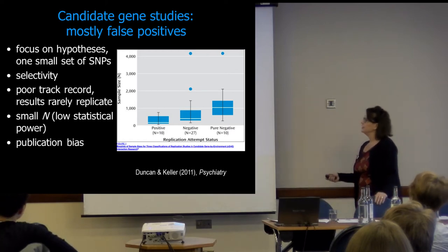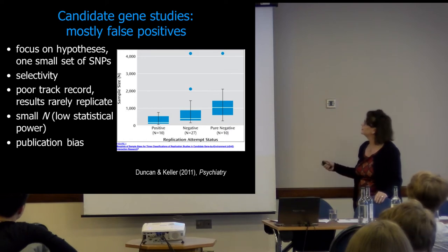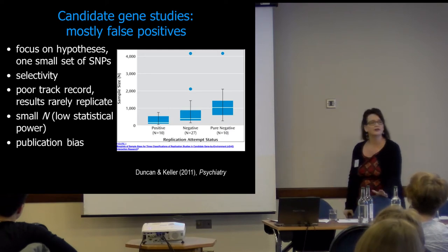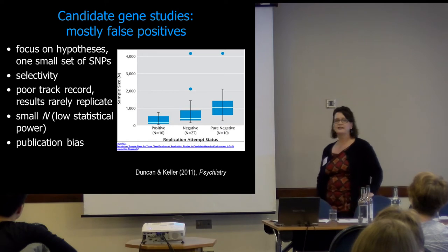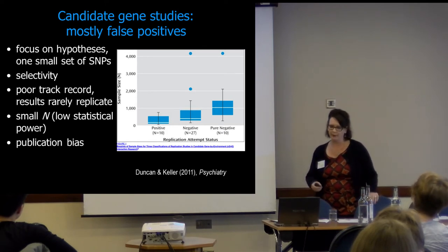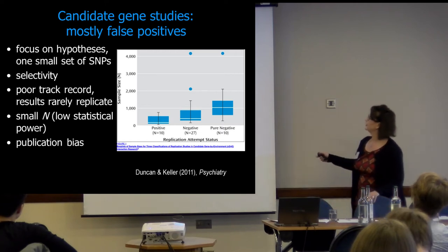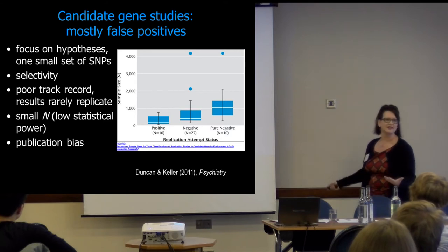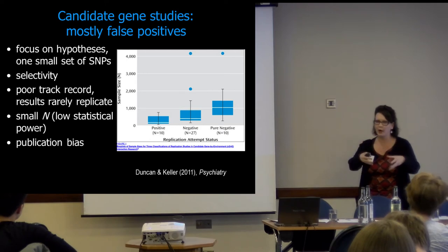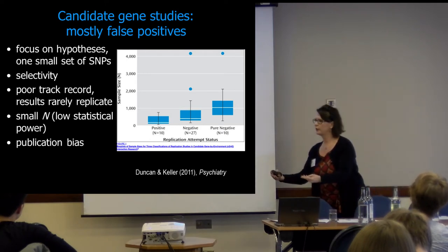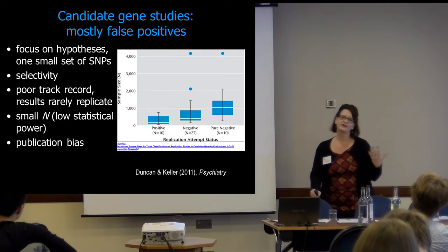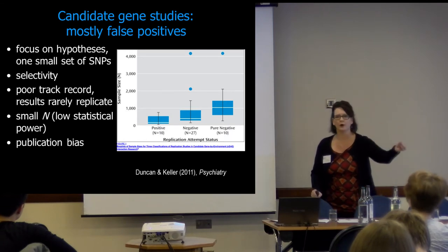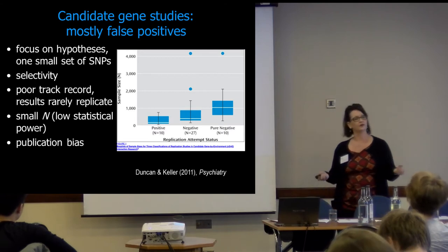Duncan and Keller did an analysis of some of these early studies and showed they often focused on one small set of SNPs, had very selective populations, rarely replicated — about 10 replicated, 27 had no replication, and one was purely negative. Most studies could not replicate: done on one population, transferred to another, and they didn't find the same thing. There was also a strong publication bias — that people have 'the gene for' this or that, which influenced the results.